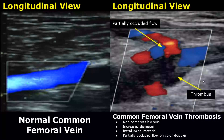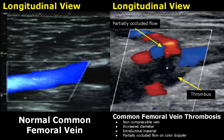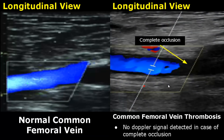Here is a longitudinal view showing common femoral vein thrombosis with color Doppler. There is no flow in this area but there is some flow over here — it is a partially occluded flow. In this image there is complete occlusion due to thrombosis, with complete absence of blood flow.